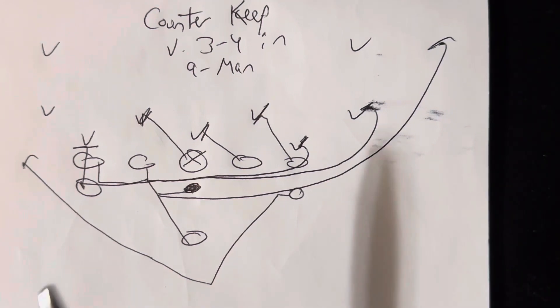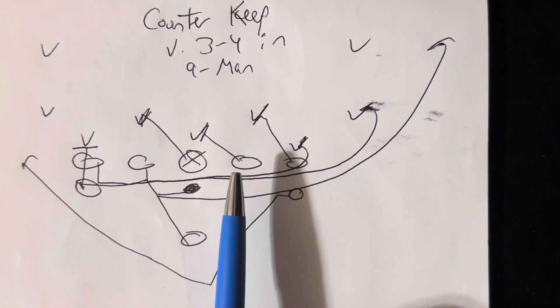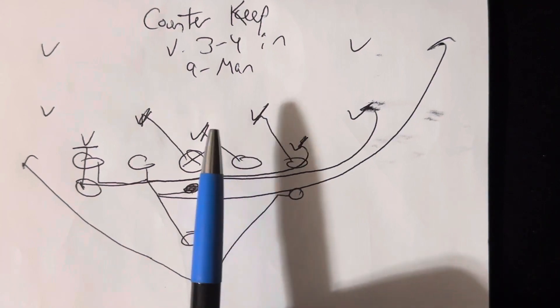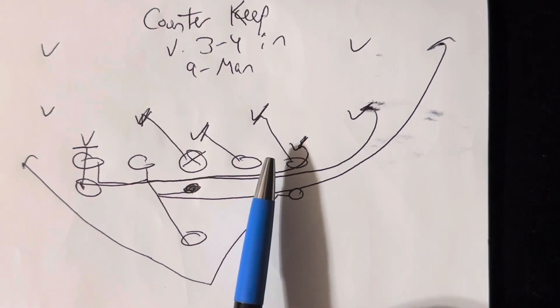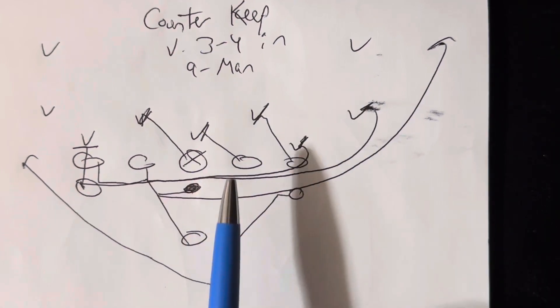So what will happen is we'll go with the blocking. Counter-keep to the right, the playside tackle and guard are all blocking gap down backer. So if there's somebody in their gap or somebody down from them, they'll block down. Otherwise, they're on the next level.